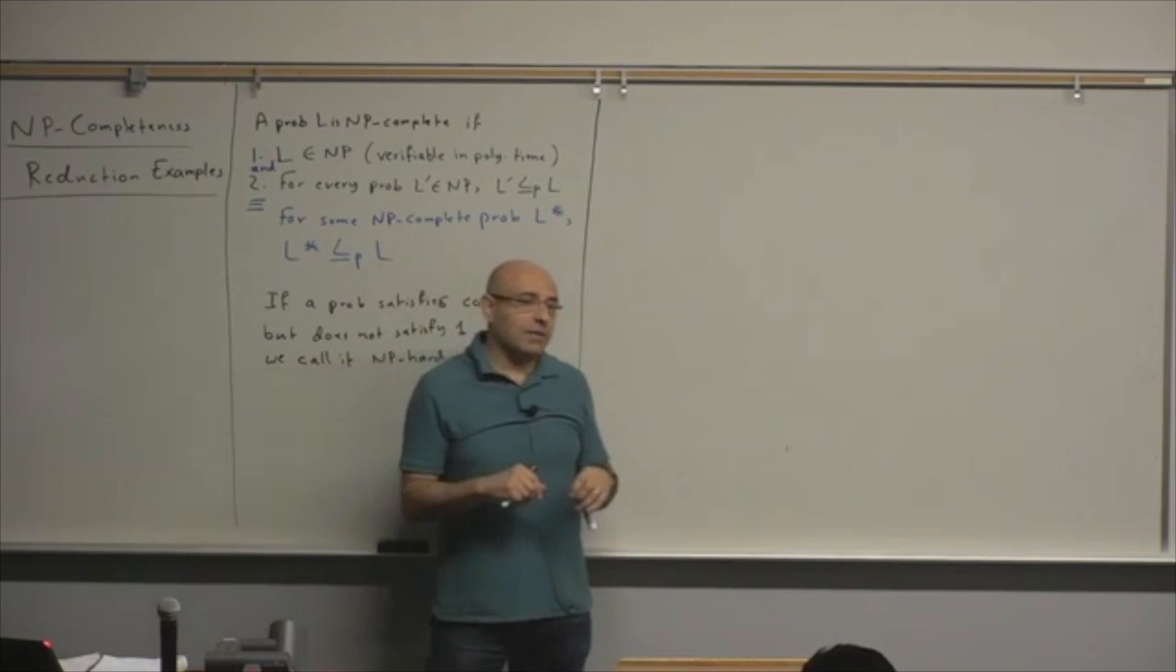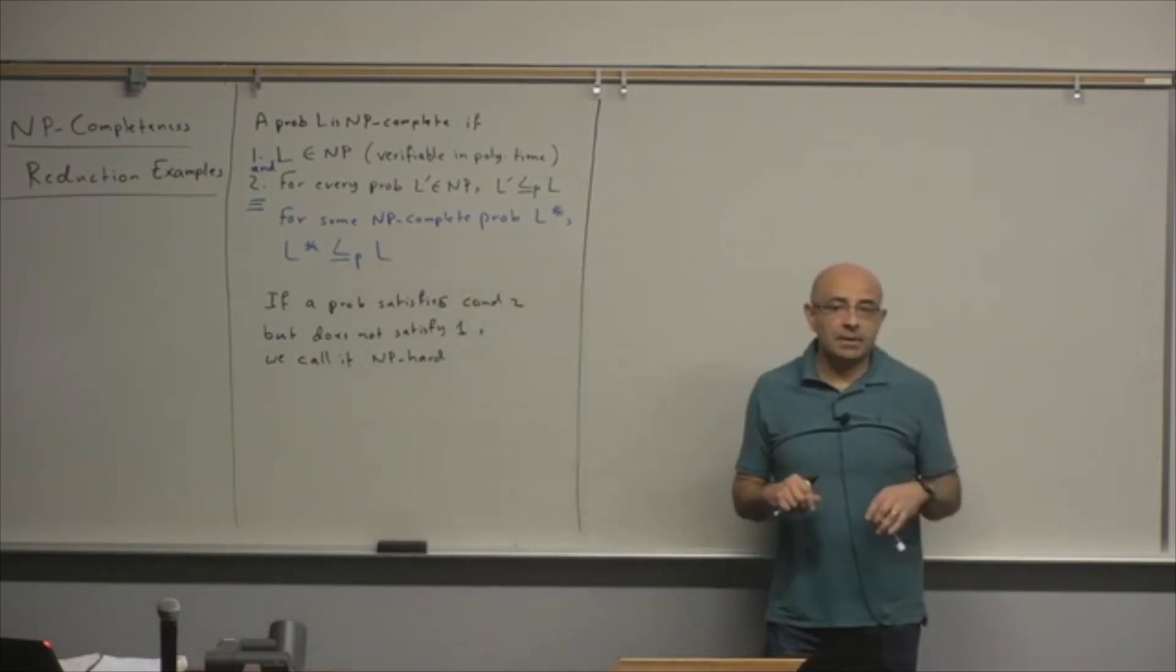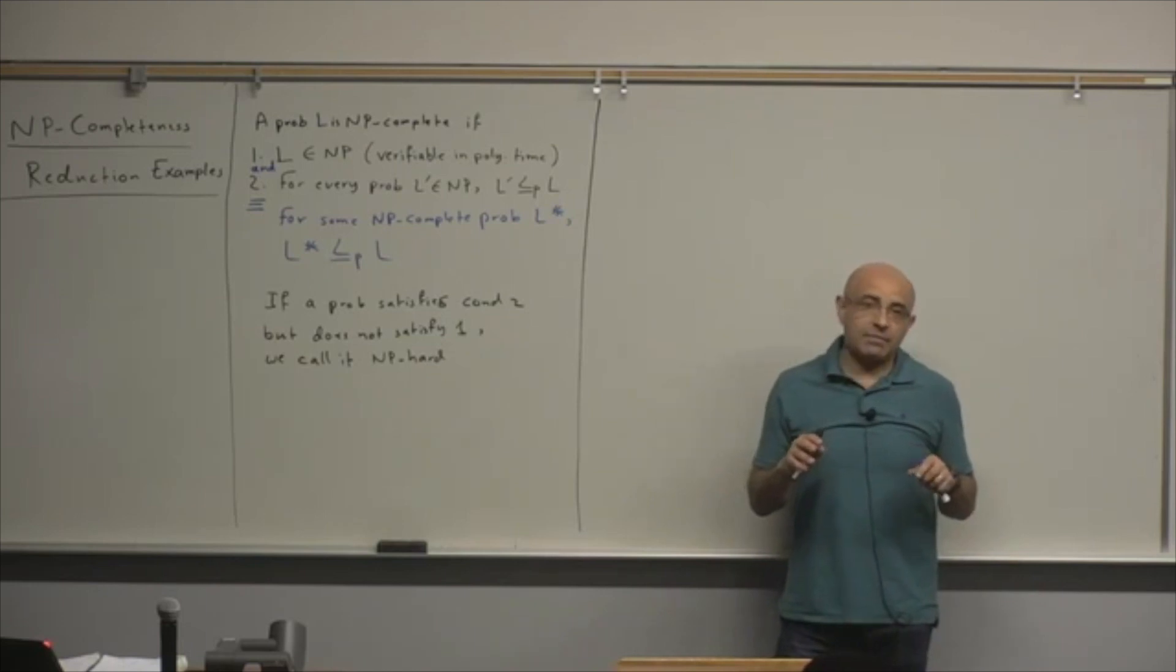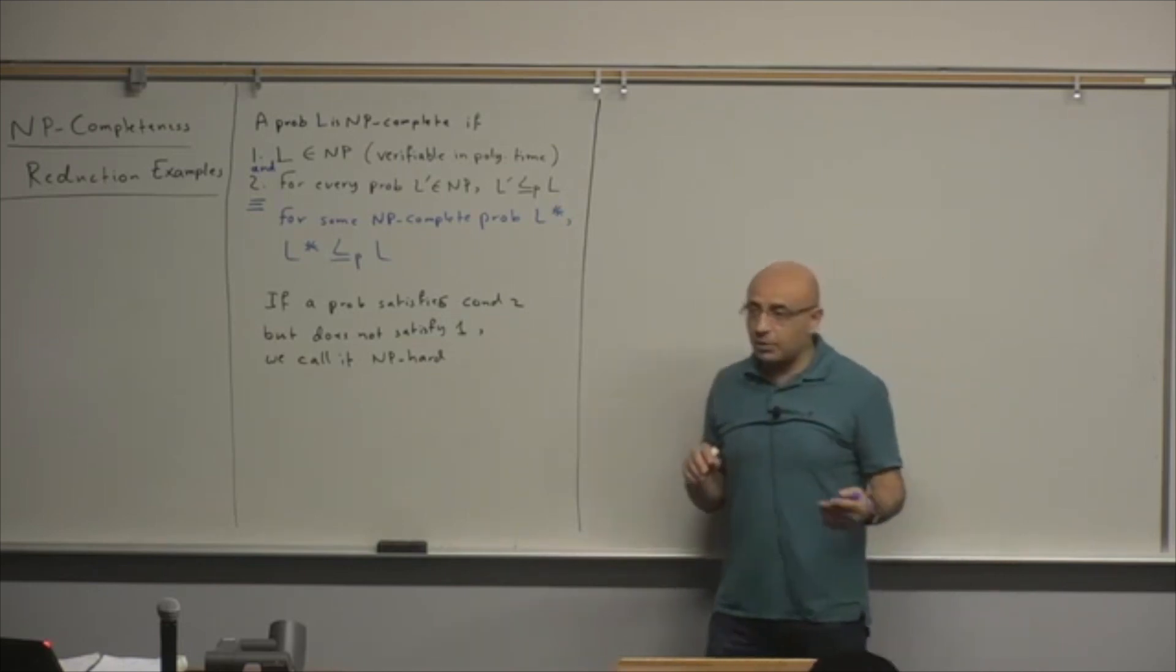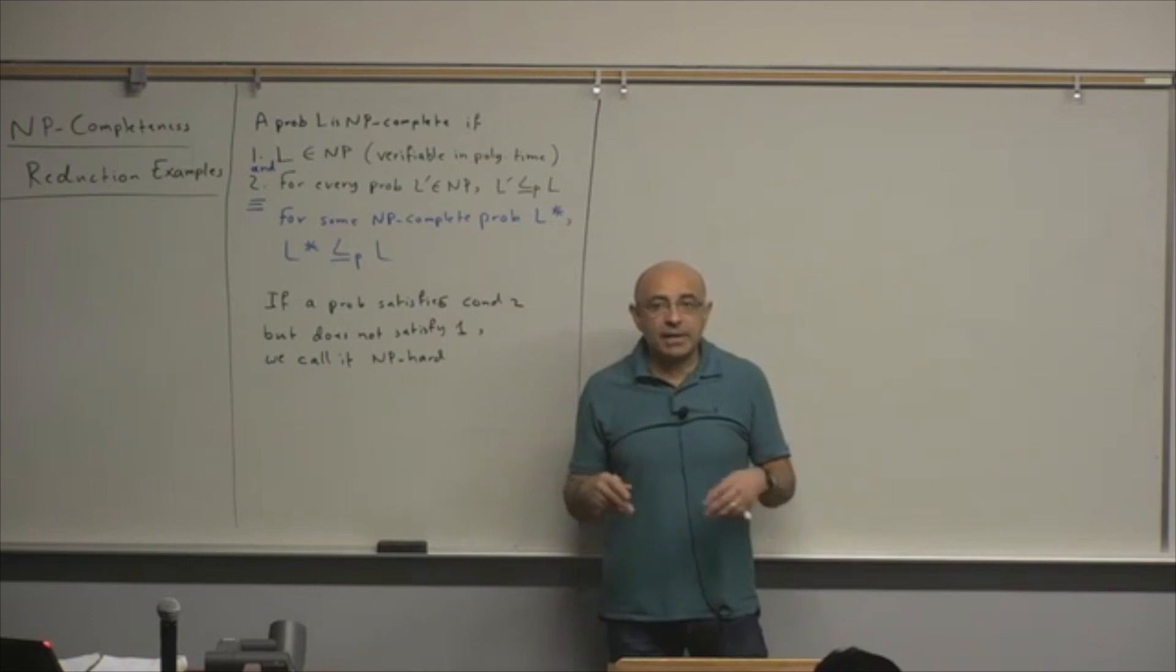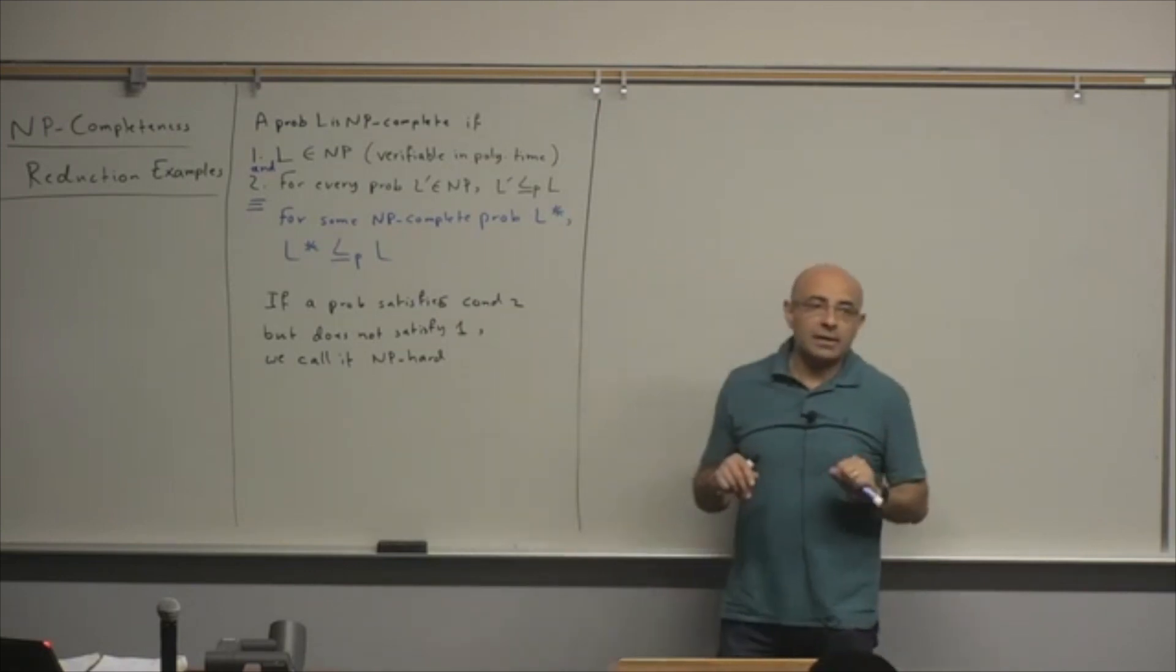Unlike the decision version of the traveling salesman problem, the decision version can be verified in polynomial time because if someone gives you a proposed solution, someone claims that this is a solution, you can verify in polynomial time that it's correct.